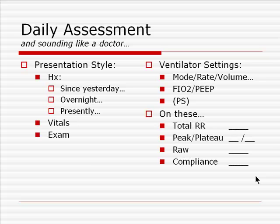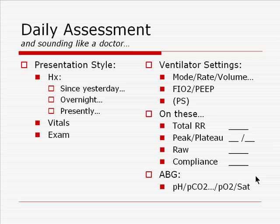On these present settings, the patient's actual rate is, their measured peak and plateau pressures are, leading to a calculated airways resistance and compliance. We will go through these mechanics momentarily. If the patient has an ABG, the data should be presented with acid-base first — i.e., pH and PCO2 — followed by oxygenation parameters of PO2 and O2 saturation.